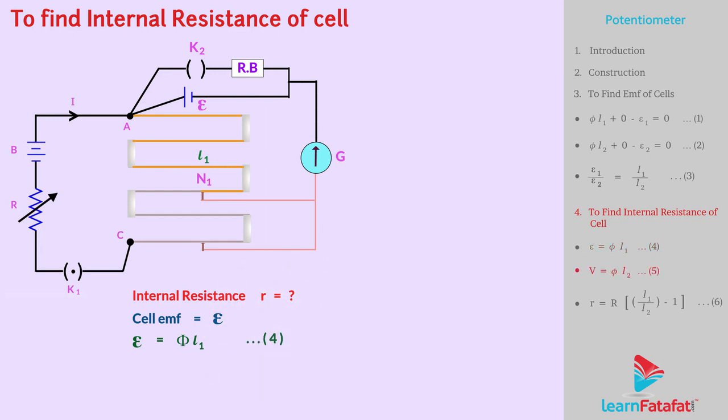When key K₂ is closed, current from the cell passes through the resistance box. Hence, V is potential difference and balanced point is obtained at length L₂, say at point N₂. Therefore, V = φL₂. Let's label this as equation number 5.